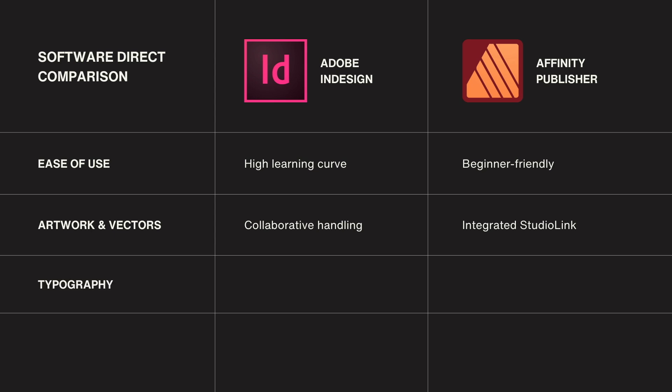Typography: If you need high-level text control for complex layouts, InDesign is the way to go. But for simpler, smaller-scale designs like a bookmark, Affinity Publisher's tools are more than capable.